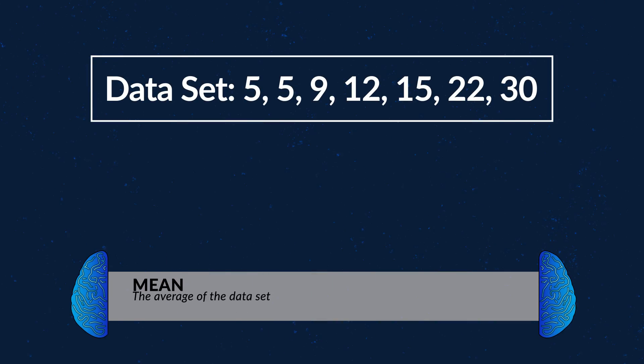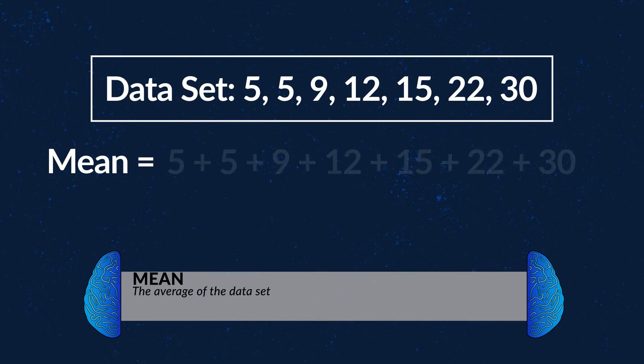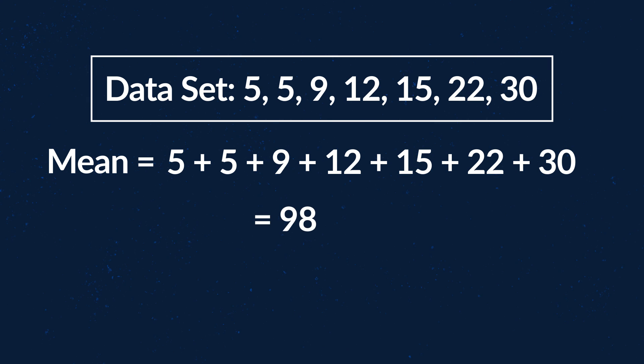We've spent some time talking about categorizing and displaying data, but now we get into the math part. Once researchers have organized their data, they need to summarize it, and it starts with the mode, median, and mean — also known as the central tendency. The mean is the average of the data set. To find this, you take the sum of all your values and divide by the amount of values you added together.